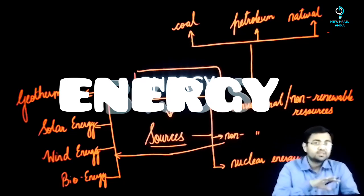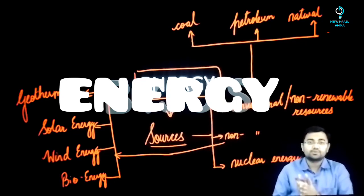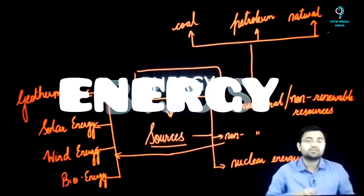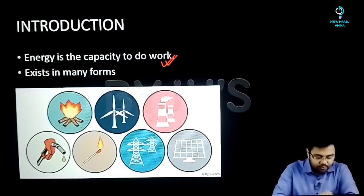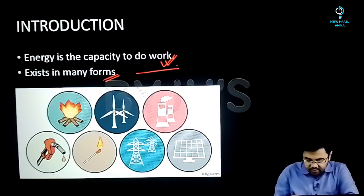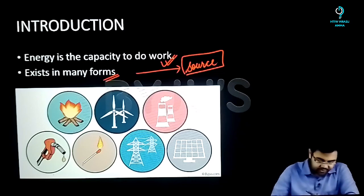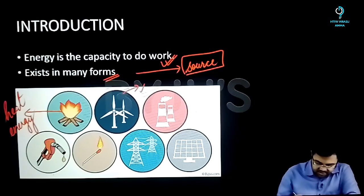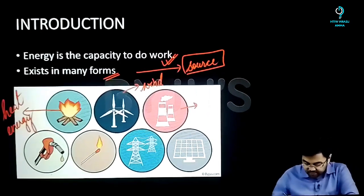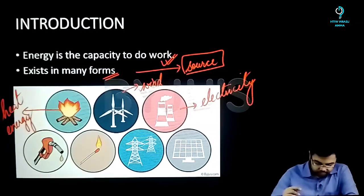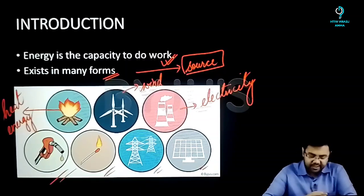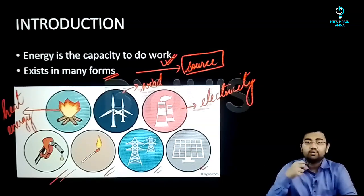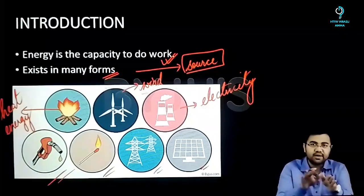We are not going to discuss all the other aspects of energy because they are not direct sources of energy — they are one source of energy that gets converted from the major sources we are going to study here. So if you talk about the definition, energy can be called as the capacity to do work, and it can exist in many forms depending on the source that is generating that energy. For example, this is a source of heat energy, this is a source of wind energy, and this is basically electricity production. You have different sources from which you get energy, classified depending on what the source is and what kind of energy it gives out.